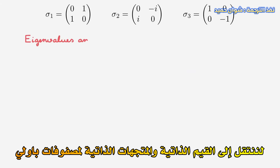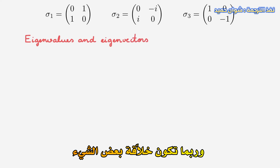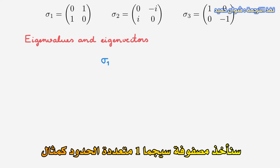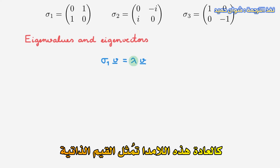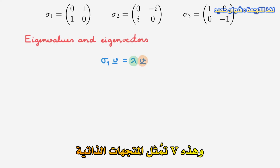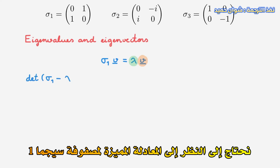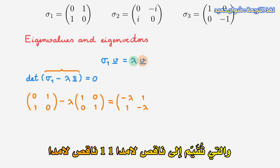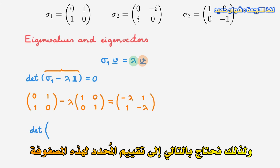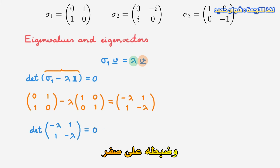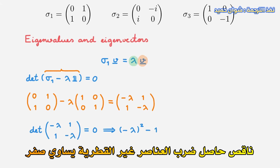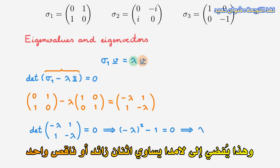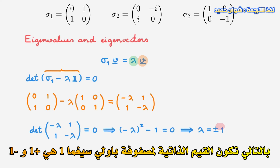Let's move on to the eigenvalues and eigenvectors of the Pauli matrices. We'll take the sigma-1 Pauli matrix as an example and write its eigenvalue equation. As always, these lambda are the eigenvalues, and these phi the eigenvectors. To find the eigenvalues, we need to consider the characteristic equation of sigma-1. The terms in brackets are the sigma-1 matrix minus lambda times the identity matrix, which evaluates to [-λ, 1; 1, -λ]. We therefore evaluate the determinant of this matrix and set it to 0, which leads to lambda equals plus or minus 1. Therefore, the eigenvalues of the sigma-1 Pauli matrix are plus 1 and minus 1.